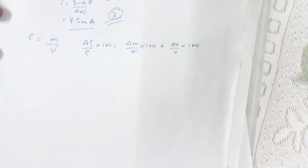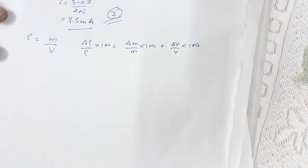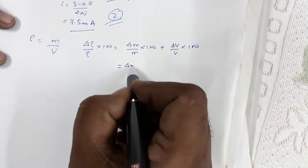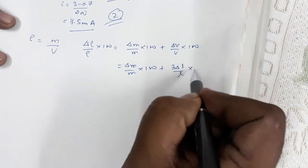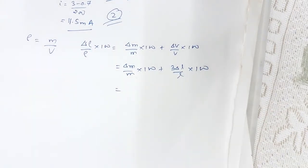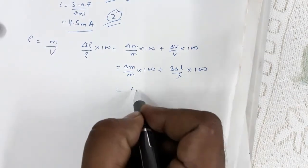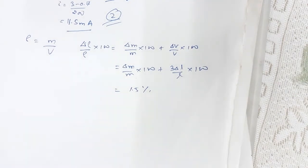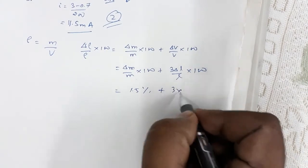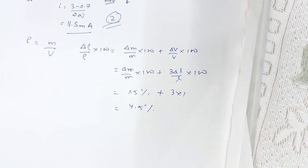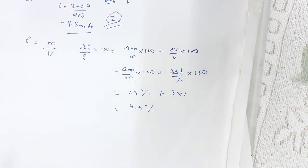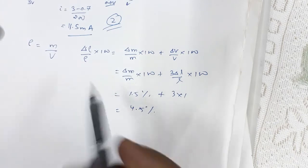Since volume is expressed in terms of length, this becomes Δm/m × 100 + 3·Δl/l × 100. The percentage error in mass is 1.5% and percentage error in length is 1%, so 3 × 1 = 3%. The total is 1.5 + 3 = 4.5%. So for Code C question number 64, the correct option is number 2 — 4.5%.